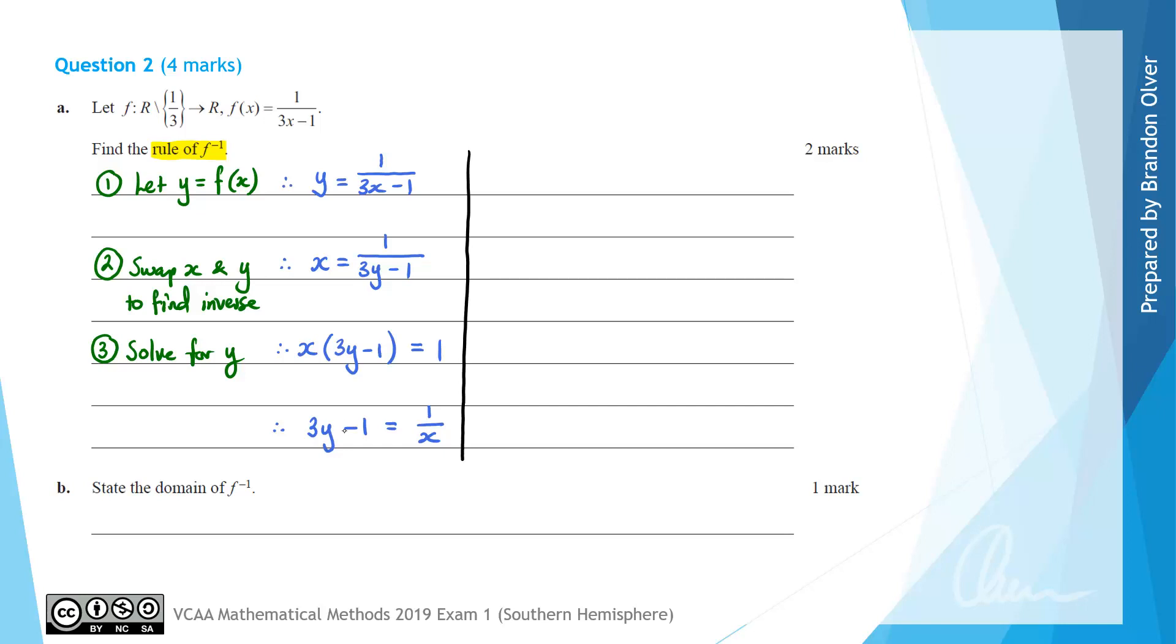The next thing we need to do to solve for y, I'll just do up here on the right hand side, is add 1 to both sides. That will leave us with 3y equals 1/x plus 1.